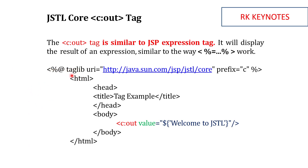JSTL tags are custom tags, so we use the taglib directive with a URI attribute. The URI for core tags is http://java.sun.com/jsp/jstl/core and the prefix is 'c'. Inside the tag, c:out is a simple print statement where you can use Expression Language (EL) to print a value. This is how we use JSTL tags.